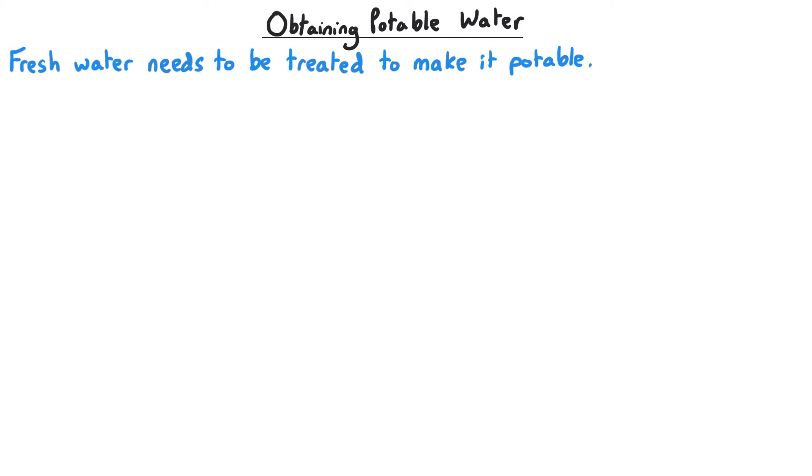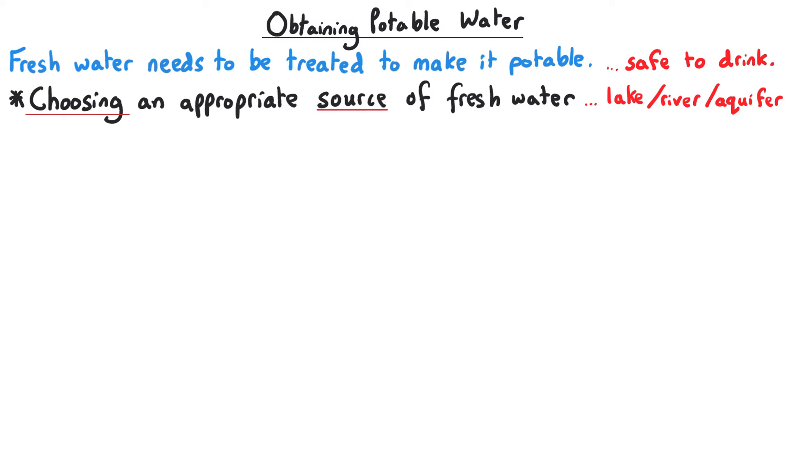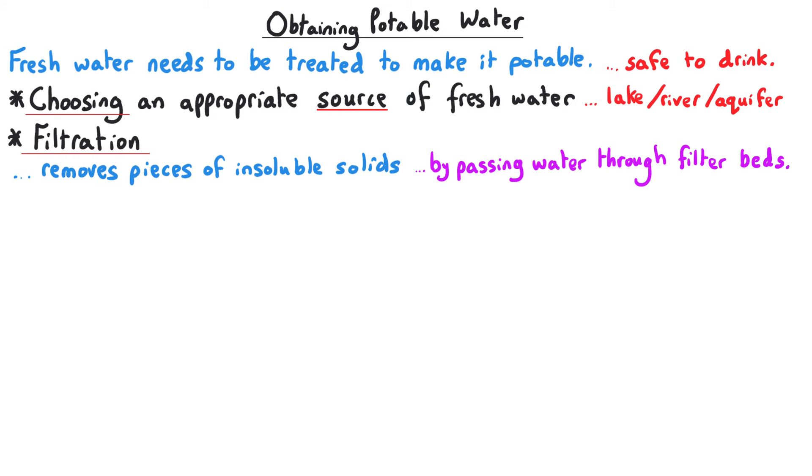Fresh water needs to be treated to make it potable, safe to drink. There are three stages. The first stage is to choose an appropriate source of fresh water—a lake, river or underground aquifer. Once we've got our fresh water, the next stage is filtration to remove pieces of insoluble solids, carried out by passing water through filter beds.